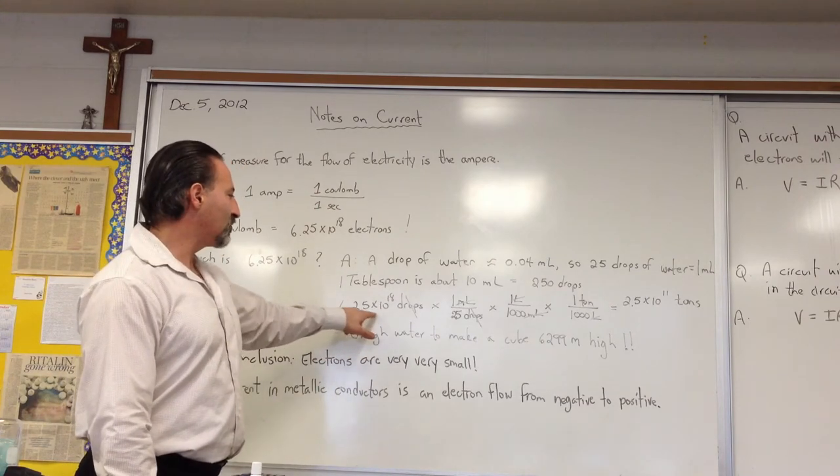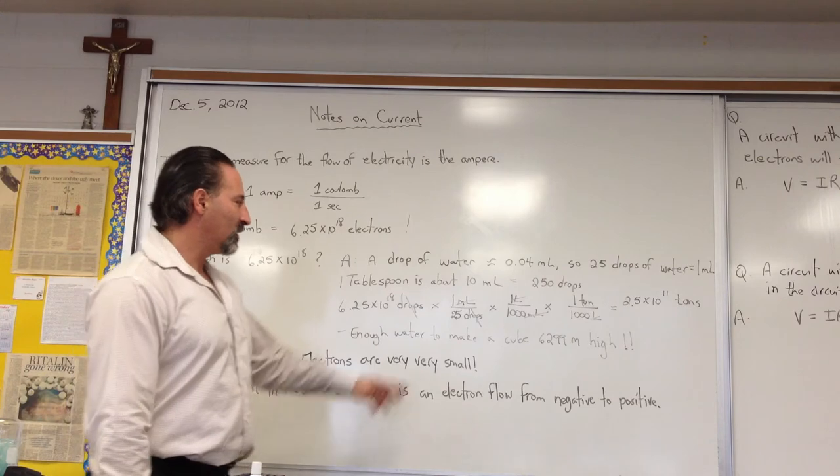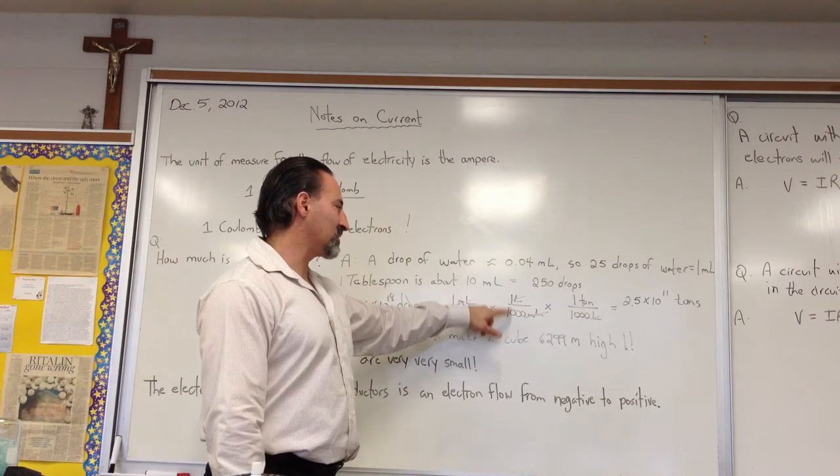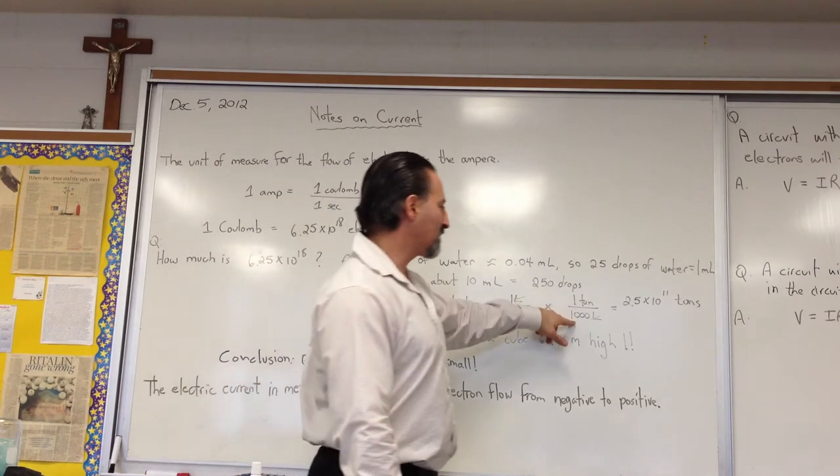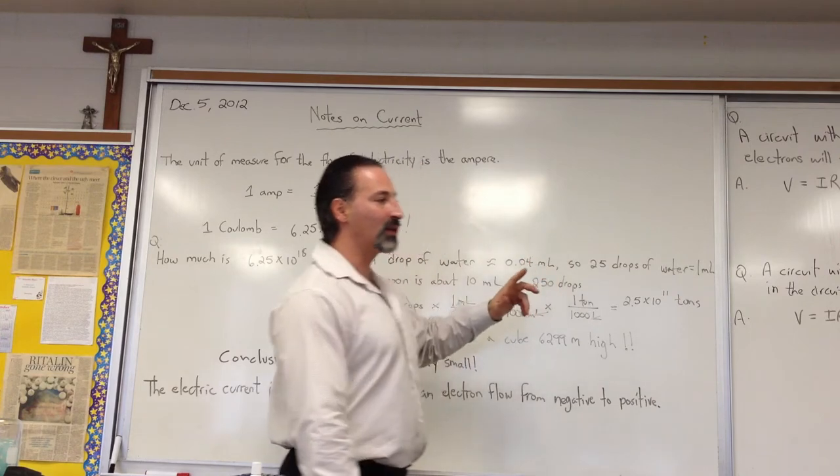So if you took 6.25 times 10 to the 18 drops of water, you would divide by 25 to get how many ml that is. Divide by 1,000 to find out how many liters that is. Divide by 1,000 again to find how many tons. Because 1,000 liters of water equals 1 ton.